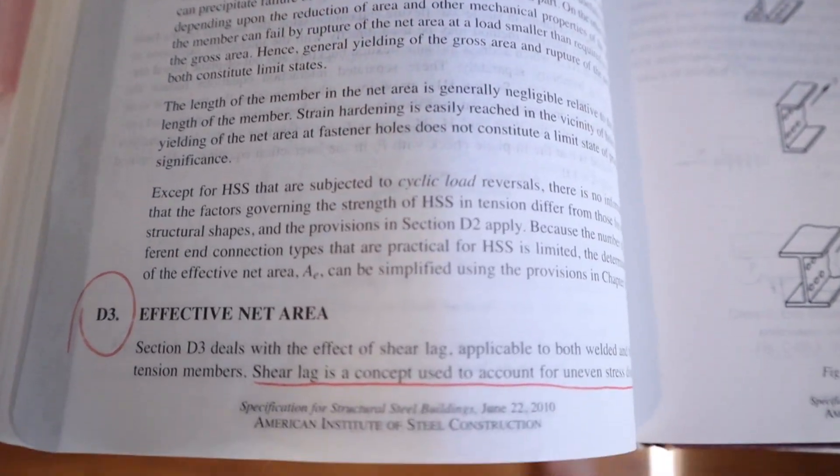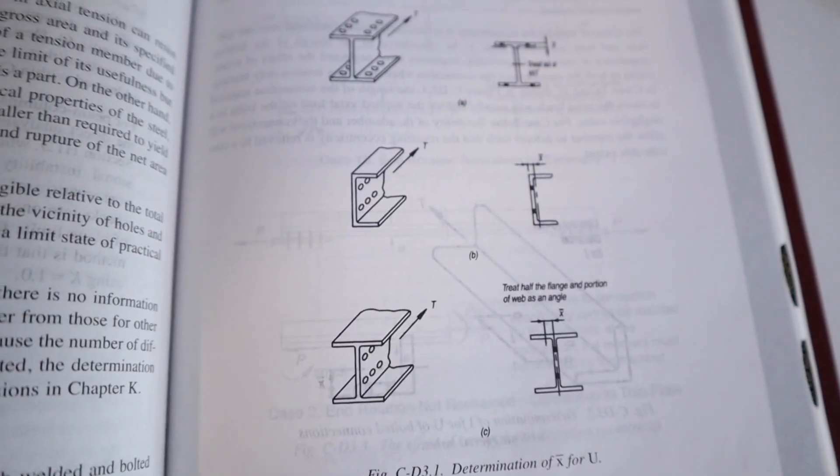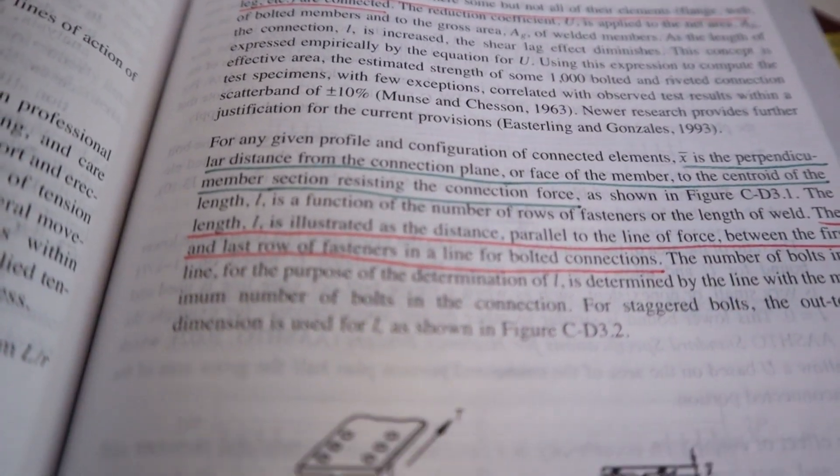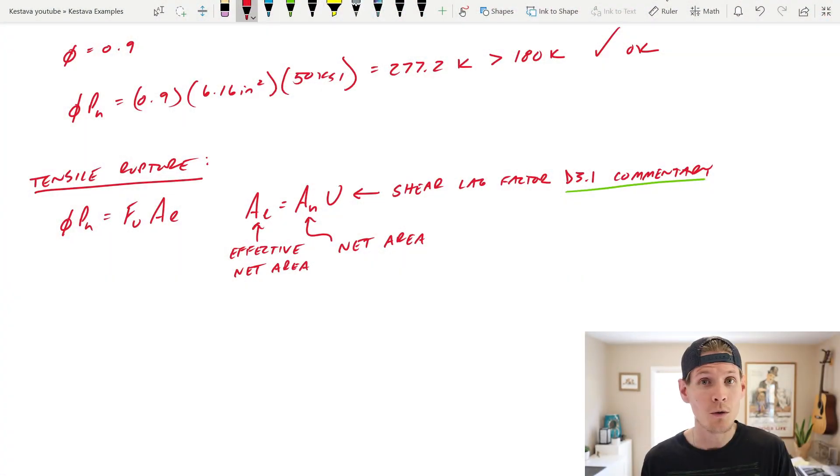So what is shear lag? Shear lag is a concept used to account for uneven shear distribution of connected sections, where some, but not all of their elements, i.e. flange, web, leg, etc., based on your shape, are connected. So if you have a wide flange section, but you're only connecting, you know, the flange, the top flange and the bottom flange with plates and a bolt connection, kind of like this example, you're not engaging the web of the member for tensile stresses, so there's some type of reduction that's happening in the overall capacity of the member. And this can be applied to every other type of shape, for the most part, based on varying principles that are defined in this book.